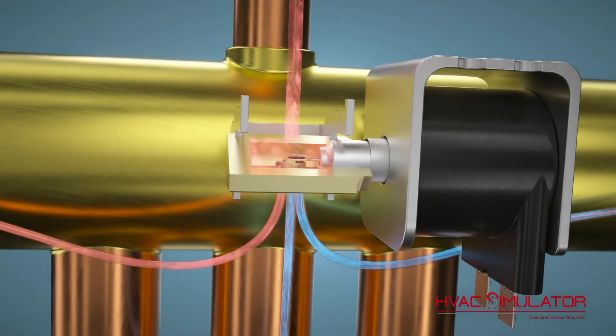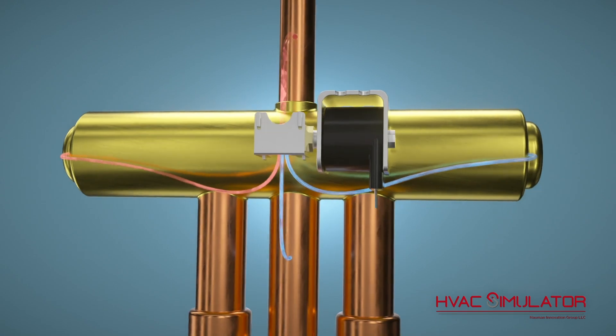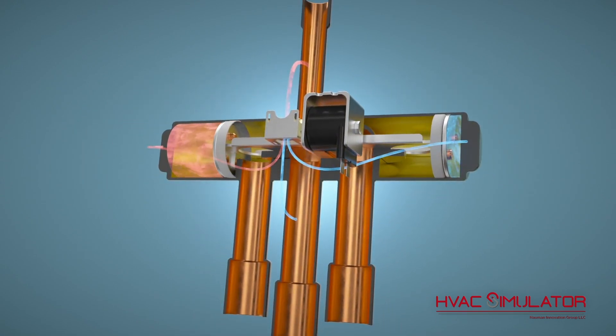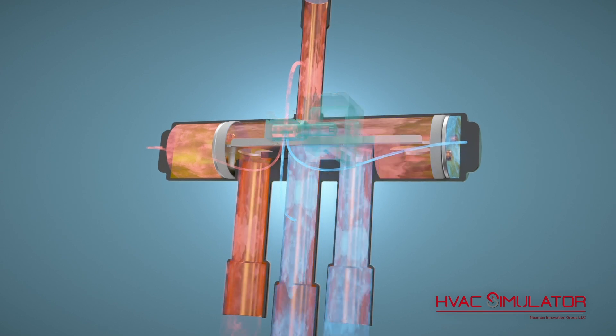The high pressure in the capillary tube is now directed to the other side of the valve body, causing a mechanical motion of the slider mechanism and directing hot gas to the outdoor unit.